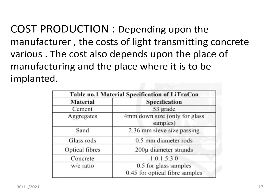Cost of production depends upon the manufacturer and varies with the place of manufacturing and installation. Material specifications include: Cement — 53 Grade; Aggregates — 4 mm down size; Sand — 2.36 mm size passing; Glass rods — 0.5 mm diameter; Optical fibers — 200 micron diameter. Concrete mix ratio is 1:1.5:3, with W/C ratio of 0.5 for glass samples and 0.45 for optical fiber samples.